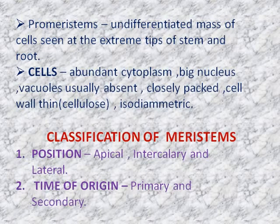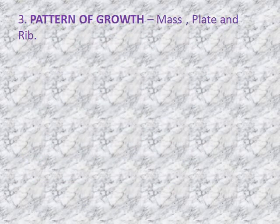This meristematic region or meristems are classified based on different categories: position, time of origin, and pattern of growth. Based on position, it can be apical, intercalary, and lateral. Based on time of origin, there is primary - that means the starting one - and secondary, which is developing from the primary one. Based on pattern of growth, it can be mass, plate, and rib. We will see all of this in detail in the next class.